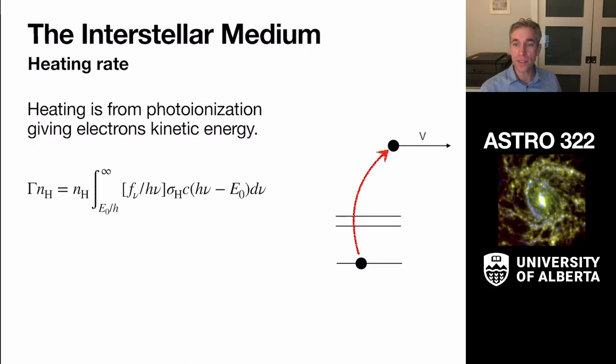How does the ISM get hot? Well, the ISM gets hot mostly from photoionization. So high energy radiation comes in, it gets processed by the ISM into cooling radiation, which is lower energy and lower wavelength.